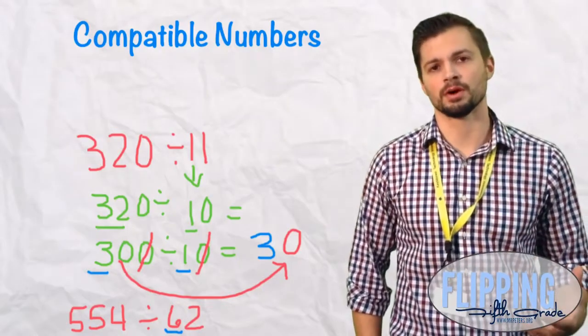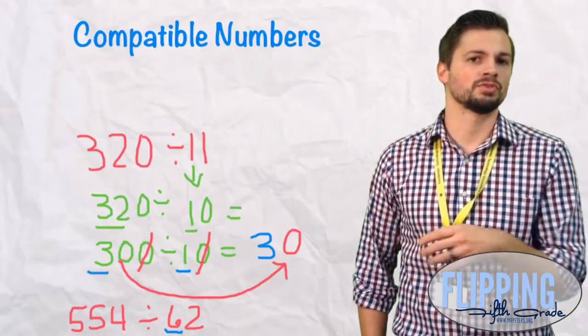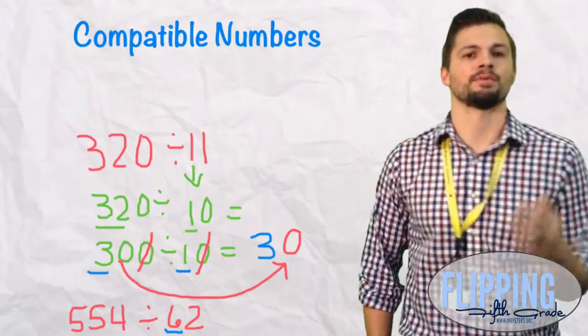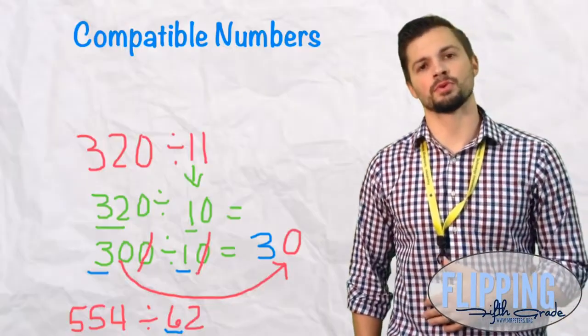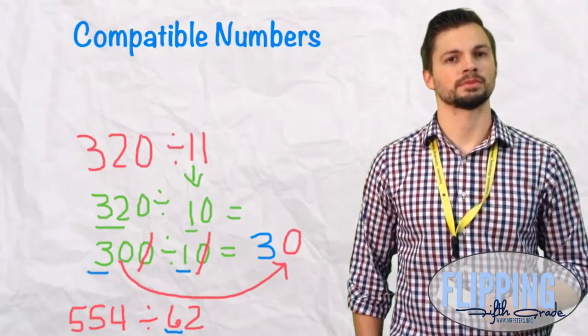And our answer is 54. But we can't round 554 to 54. We have to round it to 540. And we take that 2 off and we make it into a 60. So now we have 540 divided by 60 equals 9.